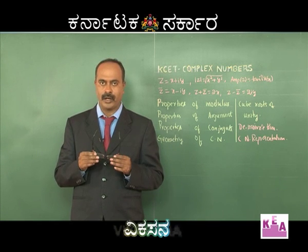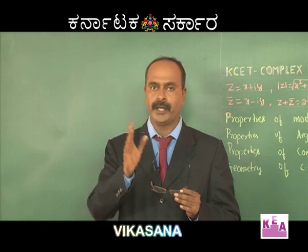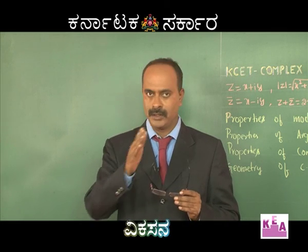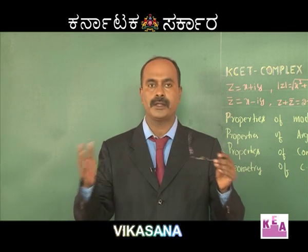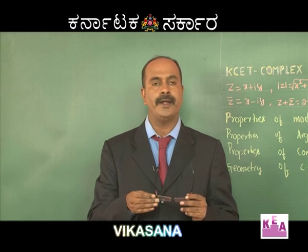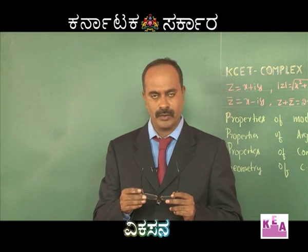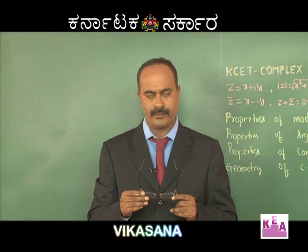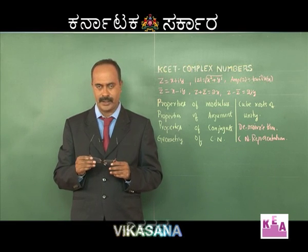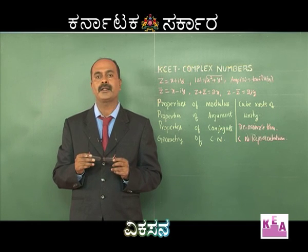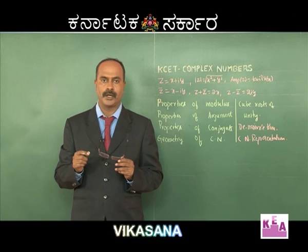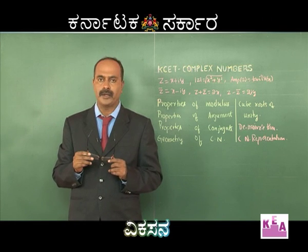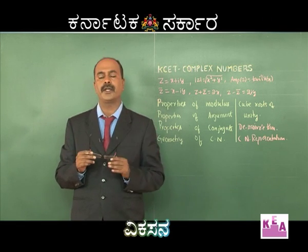|z − z₁| = R represents a circle with center z₁. Since z = x + iy and z₁ = x₁ + iy₁, expanding gives √((x−x₁)² + (y−y₁)²) = R, i.e., (x−x₁)² + (y−y₁)² = R². Also, y = mx + c represents a straight line with y-intercept c and slope m. Similarly, amp(z − z₁) = constant k is the one-point form of a line.